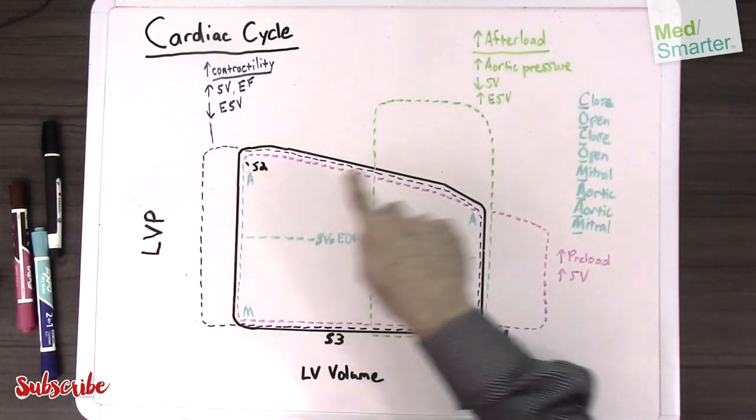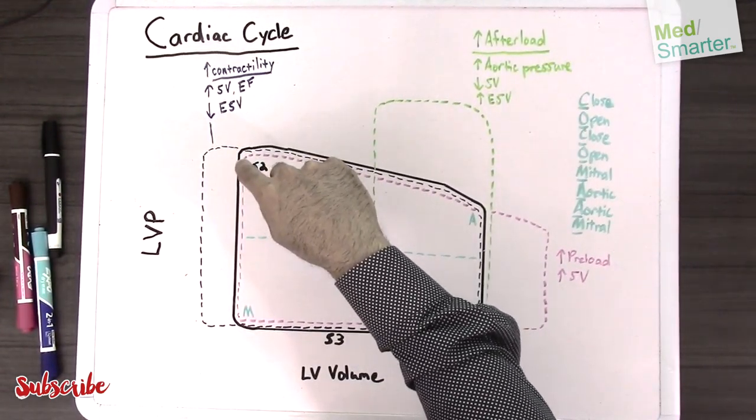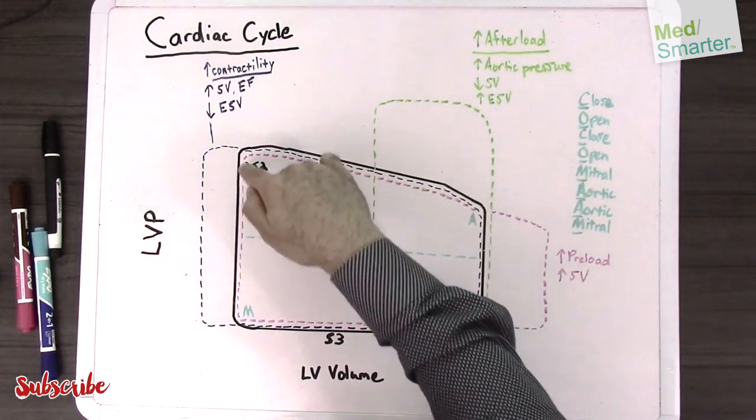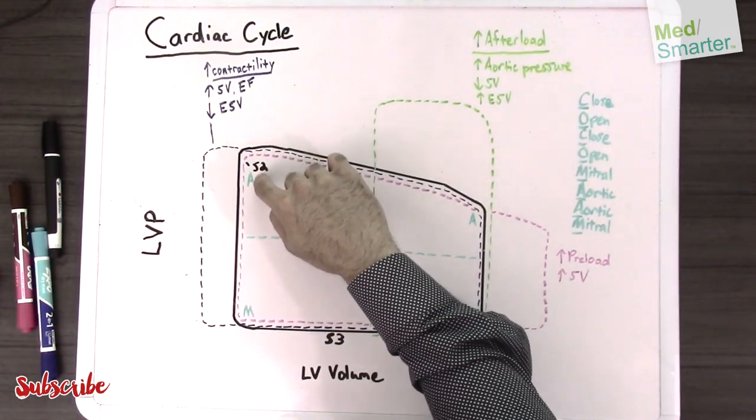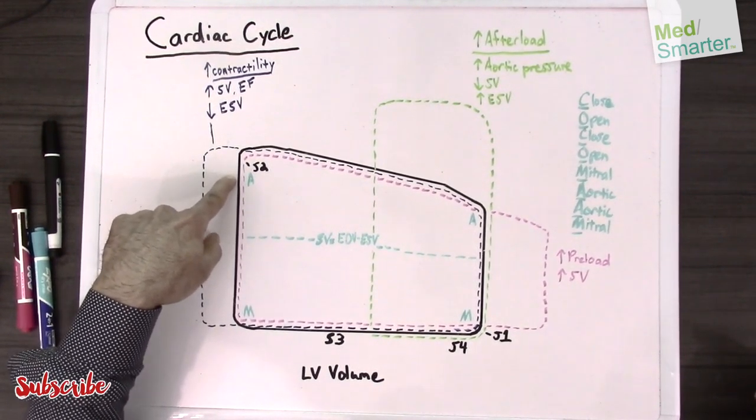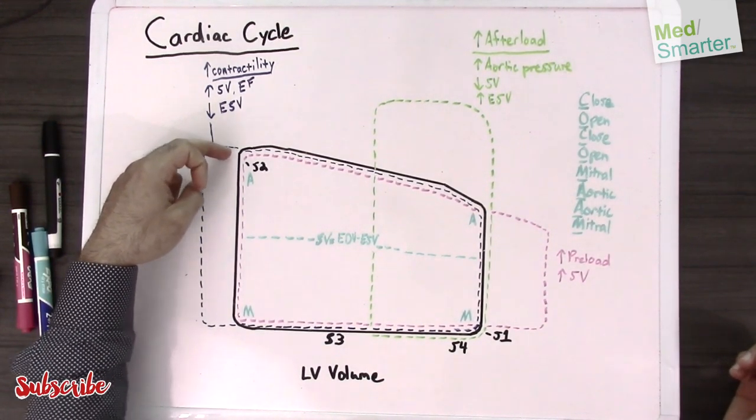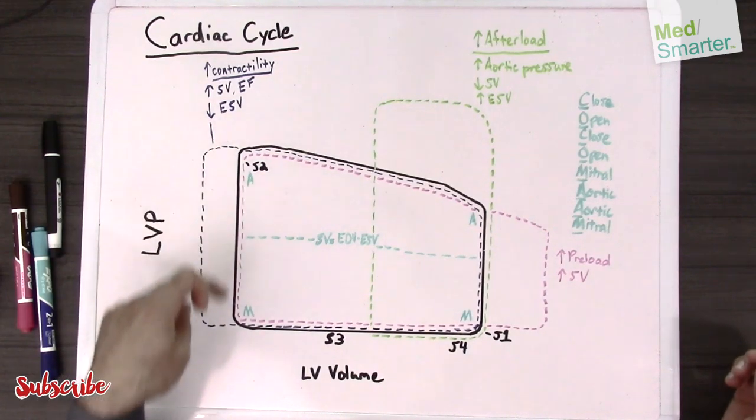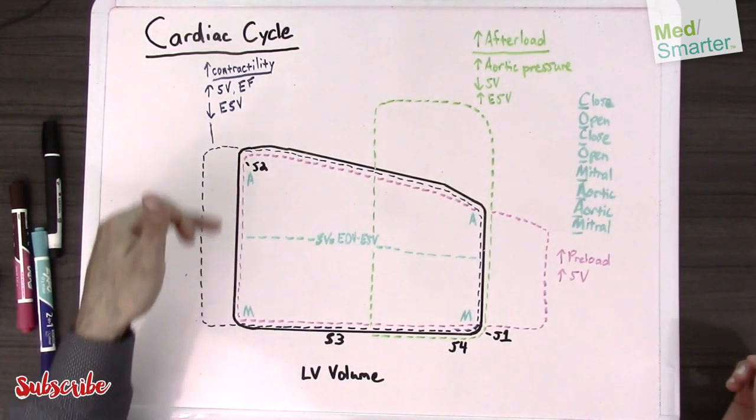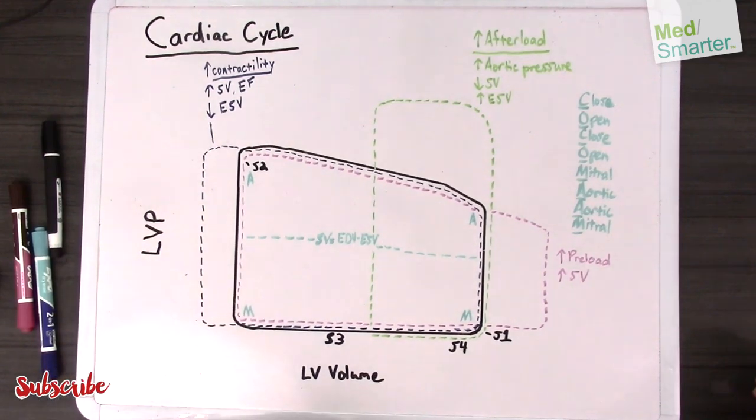So this is called the systolic ejection phase. So once the left ventricle has done its thing, it's pumped out most of the blood, now we get the aortic valve that actually closes. So remember our mnemonic, close, open, close, open, M-A-A-M. So now the aortic valve is going to close. So now this basically signifies the end of systole. So now the heart basically starts relaxing. So we call this isovolumetric relaxation. So again, isovolumetric, the volume isn't changing, and the heart is relaxing. So all of that muscle that contracted in the left ventricle is now relaxing, so in order to get ready for filling. So the pressure is dropping rather quickly.